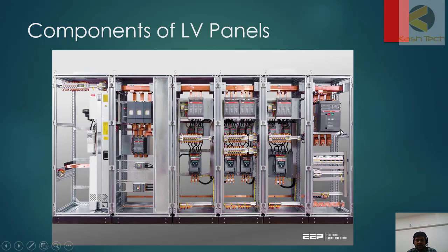Here, for your interest, I have shown a screenshot of an LV distribution panel. Here you can see various components - these are MCBs, this is the main air circuit breaker. So this is a good example.